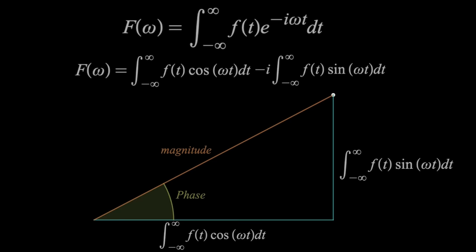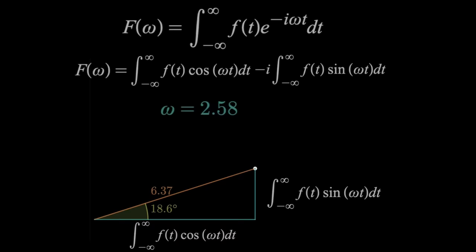As we sweep the angular frequency and keep track of that magnitude and phase, however they may change, you get the entire Fourier transform. That's pretty much it. We just find some areas, put those on a right triangle, and the magnitude and phase come from that.